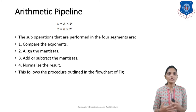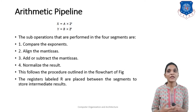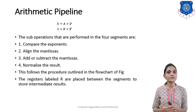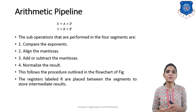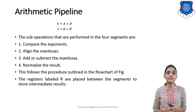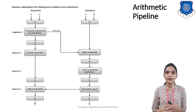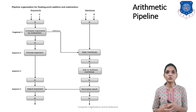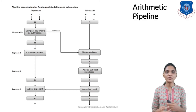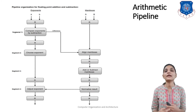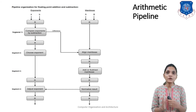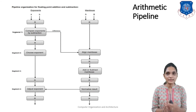This procedure is shown in a flow chart. Registers labeled R are placed between segments to store intermediate results. In the first segment we compare the exponents by means of subtraction. In the second segment we align the mantissa. In the third segment we perform addition or subtraction. In the fourth segment we normalize the result. This will be further clarified after the example.